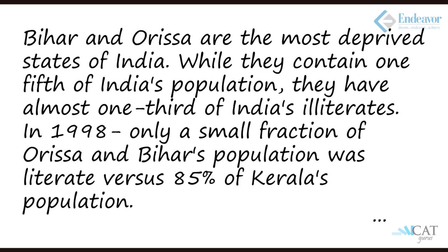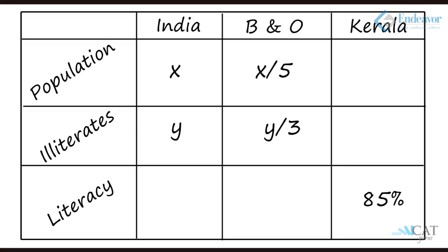In 1998, only a small fraction of Orissa and Bihar's population was literate versus 85% of Kerala's population. The small fraction gives no concrete figure, so we skip that. But we get to know that Kerala's literacy rate was 85%, so we add a column for Kerala with literacy at 85%.